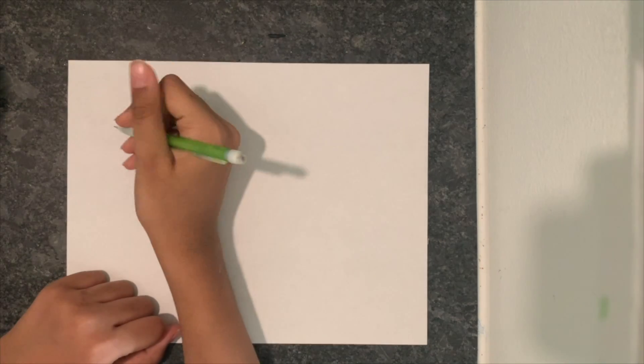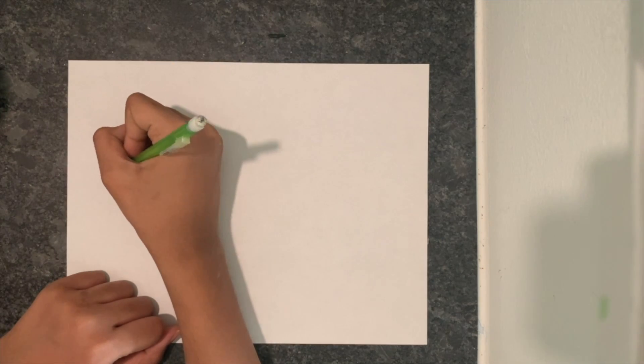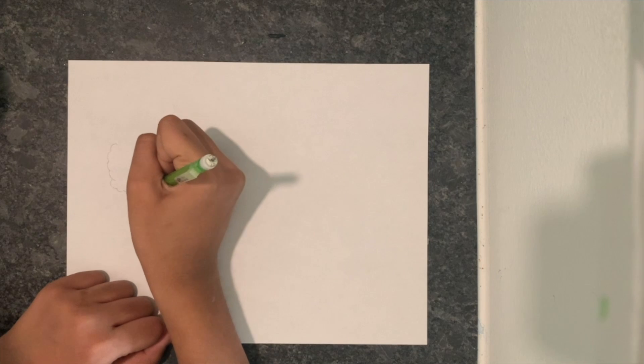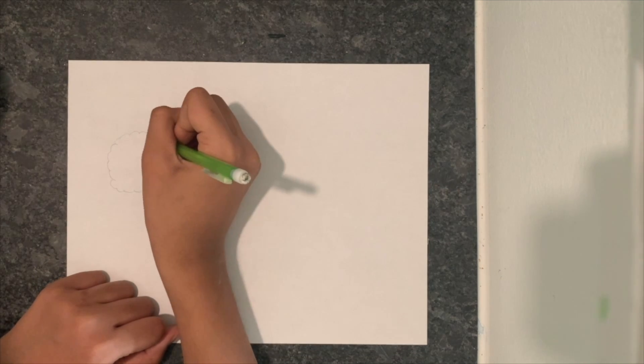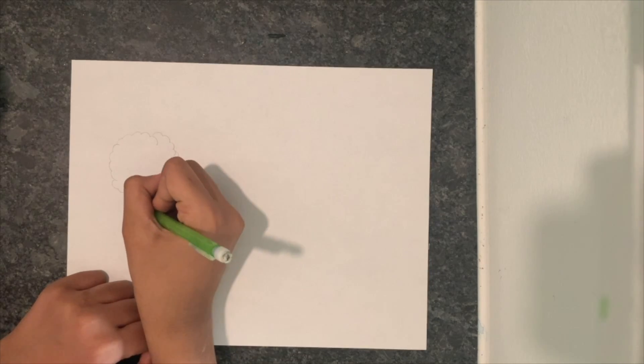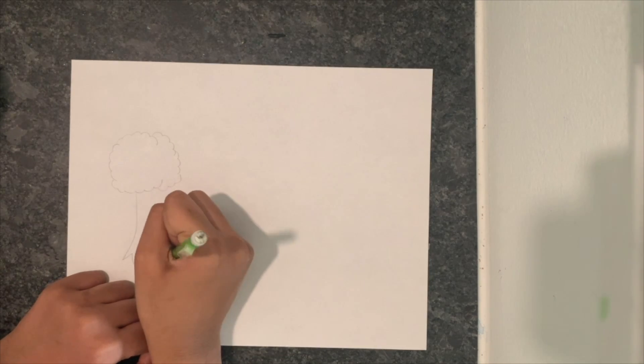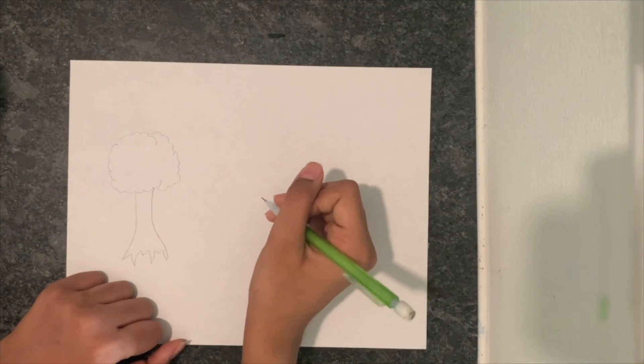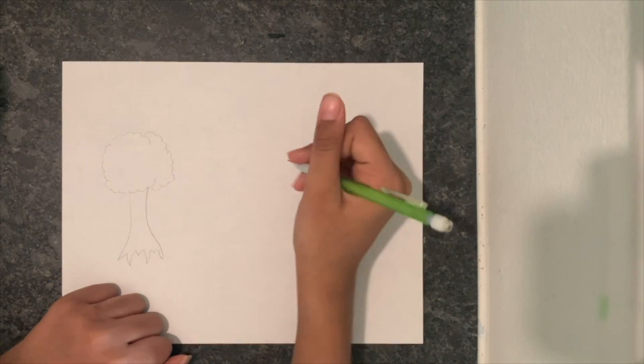To start this painting off, you're going to need a pencil and start by drawing a cloud on the side of your paper. This is going to be our tree in our landscape. To draw the trunk, draw a curved line and some claw-like structures on the bottom, and draw a curved line that connects to these claw-like structures.